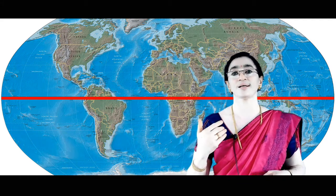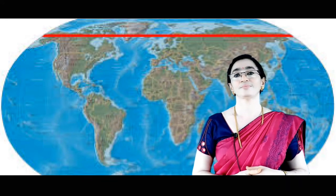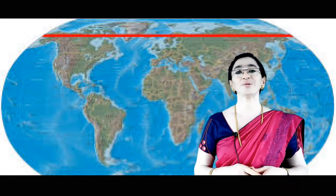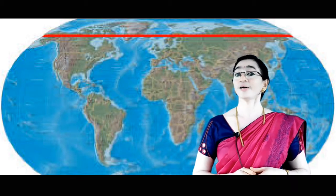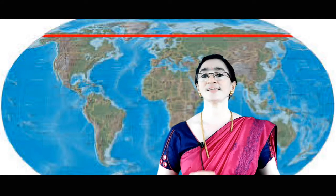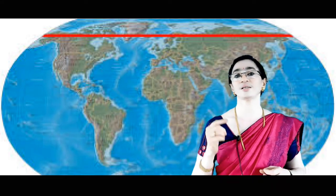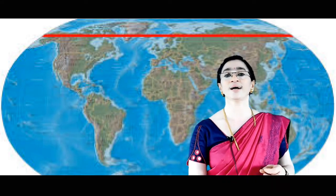Then another important latitude in the Northern Hemisphere is the Arctic Circle. Its value is 66 and a half degrees north. Same way, the Antarctic Circle has a value of 66 and a half degrees south.